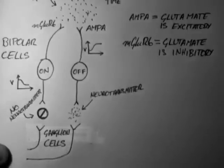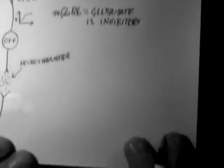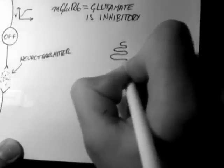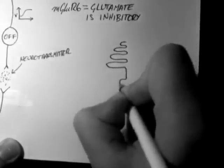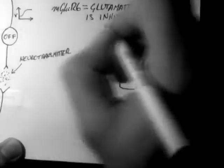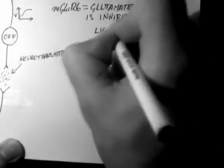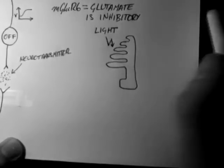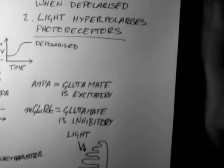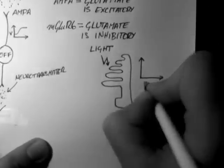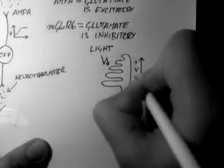Let's look at what happens to a cell in the light this time. Here's our cone again. And light hits the cone. Now, according to rule number two, light hyperpolarizes photoreceptors. Therefore, this cell becomes hyperpolarized inside.